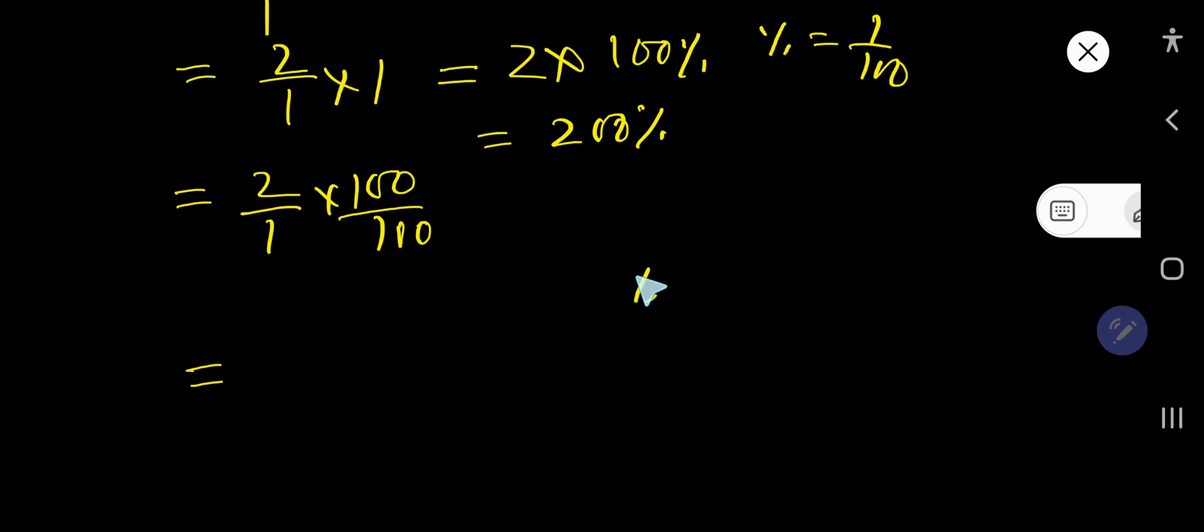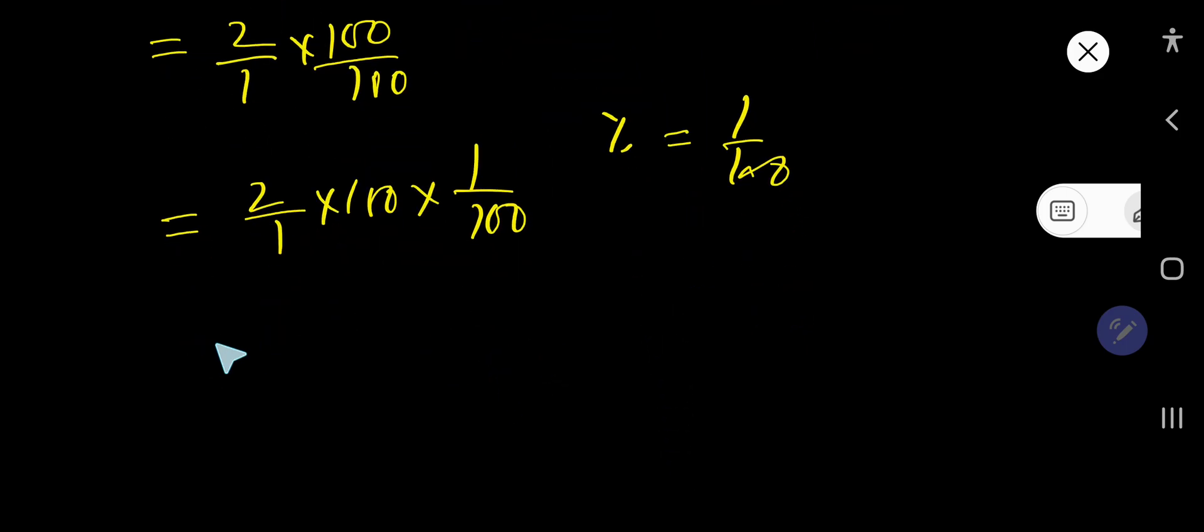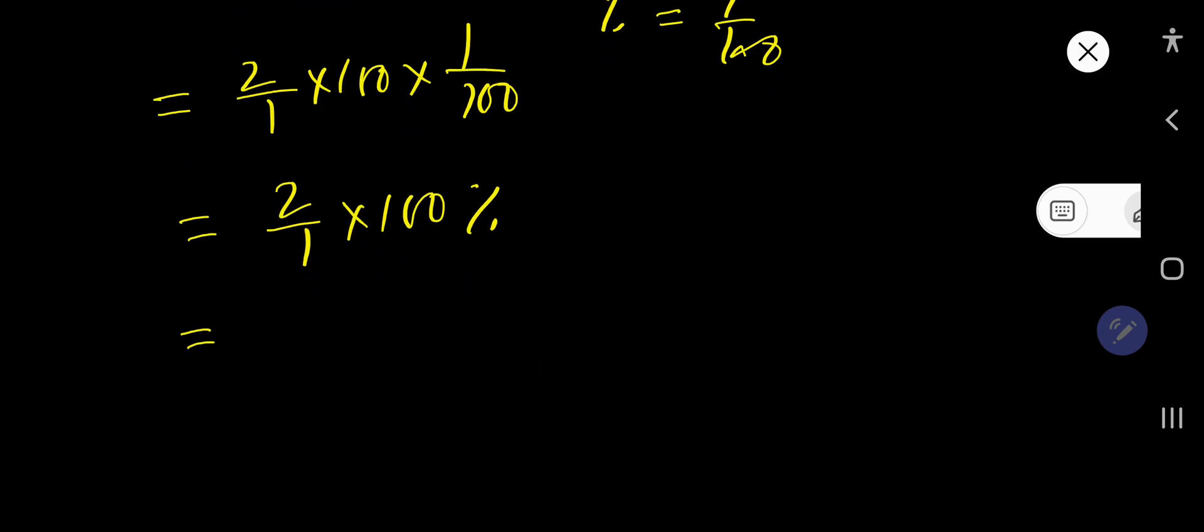Percent means 1 over 100. So you can rewrite this 100 times 1 over 100. So 2 over 1 times 100, 1 over 100 means percentage. Now we can also rewrite this like 100 divided 1 over 100.